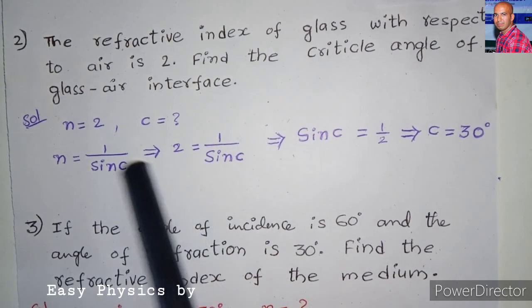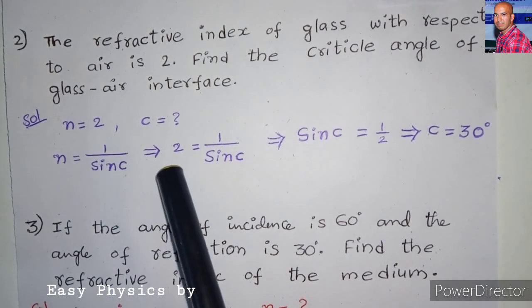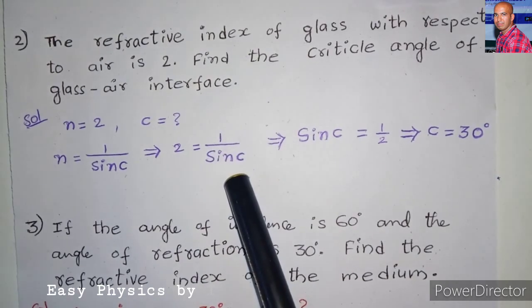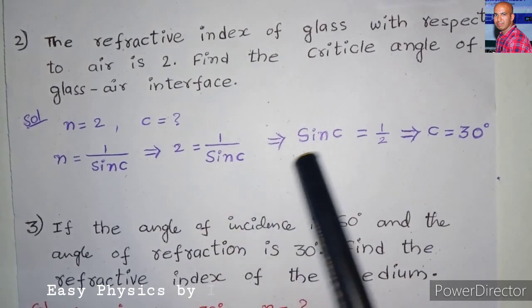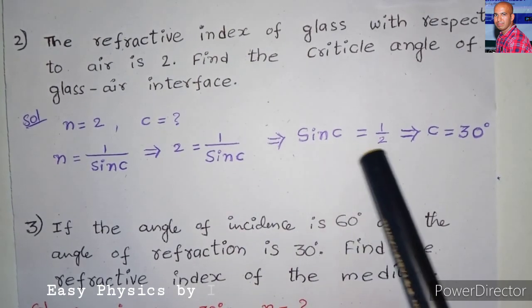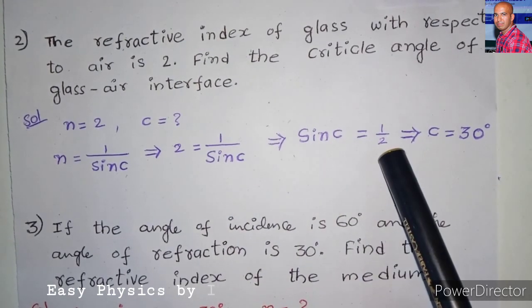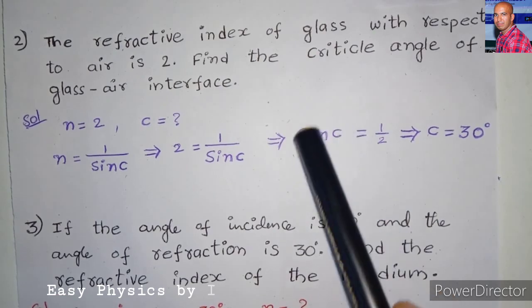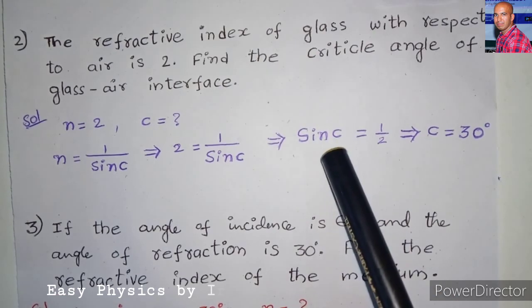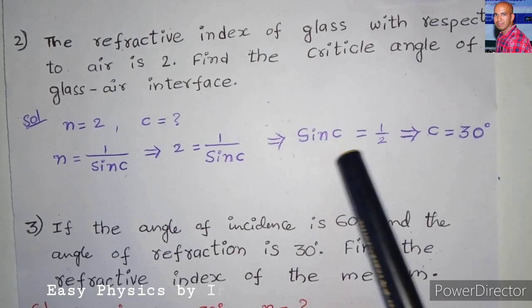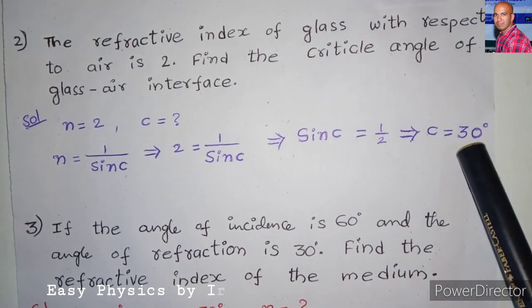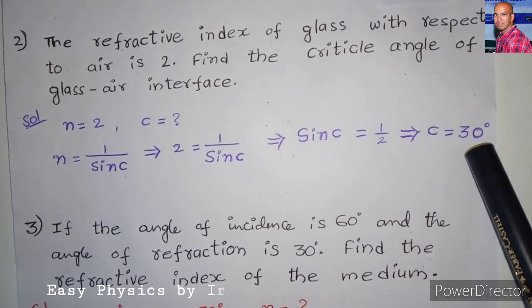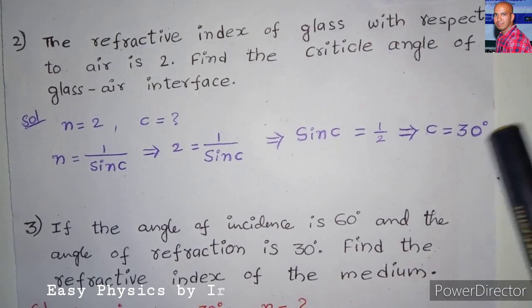Substituting the values, we get 2 = 1/sin C, so sin C = 1/2. We know that sin 30° = 1/2, therefore C = 30 degrees.